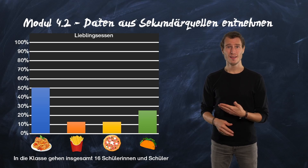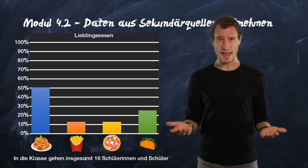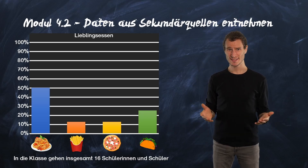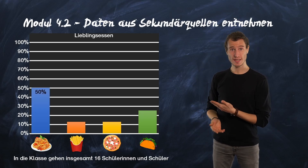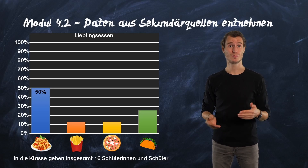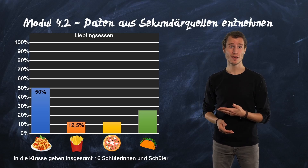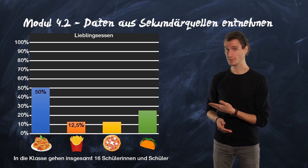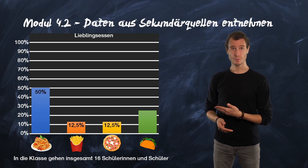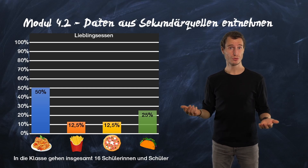You can recognize what they like best. The largest part of the diagram, obviously, an incredible 50% of all students in the class like spaghetti best. However, 12.5% of all students like fries best and just as many listed pizza as their favorite. 25% like döner best.